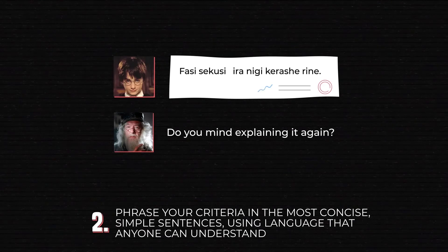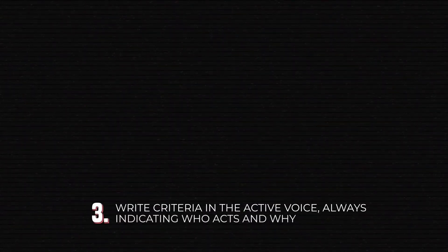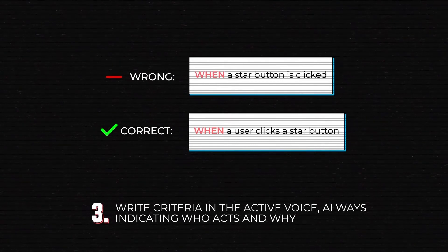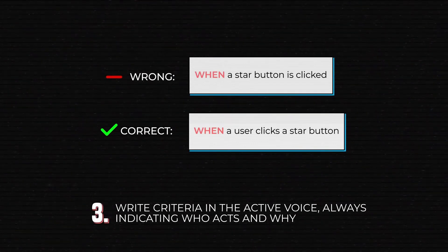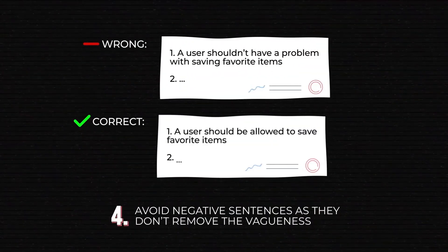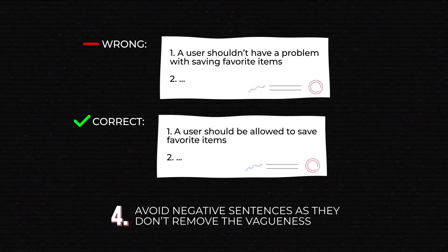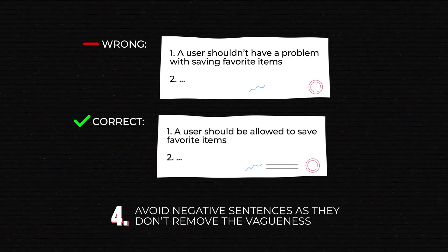That's the whole point. Similar to user stories, write criteria in the active voice, always indicating who acts and why — a user is at the root of everything, and this should remain clear. One final piece of advice is to avoid negative sentences, as they don't remove the vagueness. If you don't want something to happen, make a decision about what should happen instead. Otherwise, you may not enjoy the result.